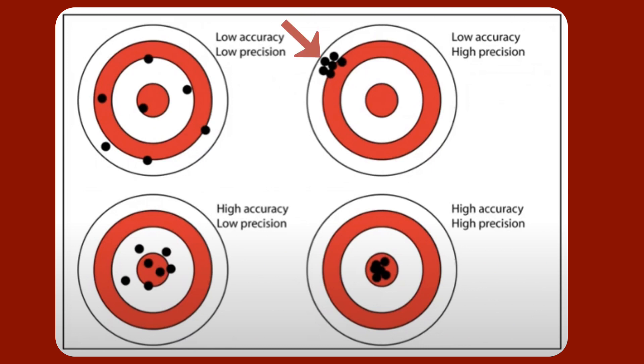In comparison, this one in the top right corner you see how all of the shots are very close together. That means there's a high amount of precision but because it's not where it's supposed to be there is a low accuracy.